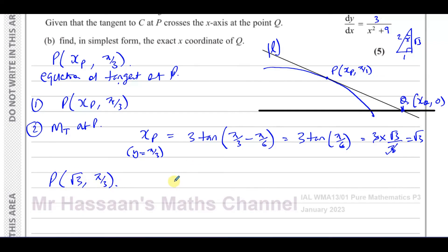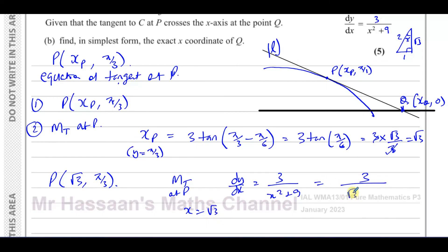Now find the gradient of the tangent at P. Using dy/dx = 3/(x² + 9) with x = √3: dy/dx = 3/((√3)² + 9) = 3/(3 + 9) = 3/12 = 1/4. So the gradient of the tangent at P is 1/4.